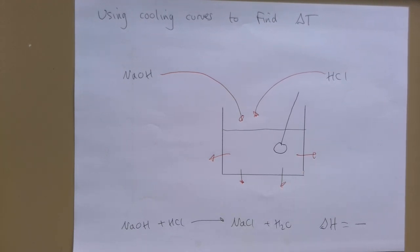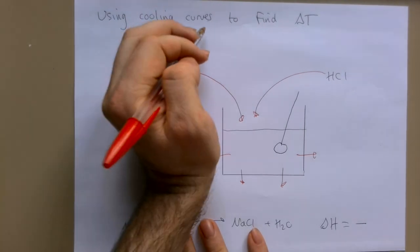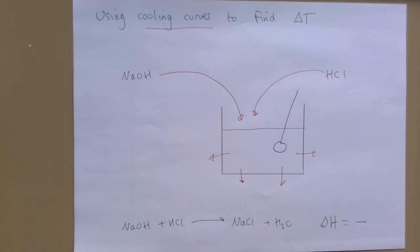Now there is a way to correct for this, or to attempt to correct for this, and that's by using something called a cooling curve. A cooling curve is a method which gives you a more accurate temperature change, a more accurate delta T. Once you've got a more accurate delta T, you can then use that in your Q equals mc delta T equation to get your delta H.